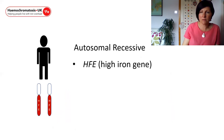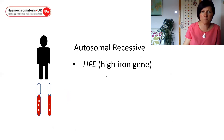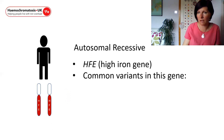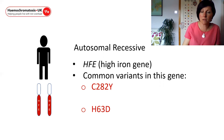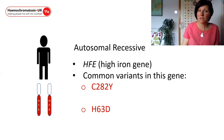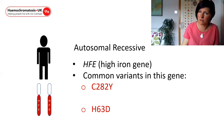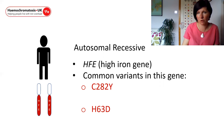The most common version of hemochromatosis is caused by variants in the HFE gene, or the high iron gene. There are two very common variants present in the white Caucasian population: C282Y and H63D. C282Y is a full-blown mutation which can dramatically reduce the amount of working protein present, whilst H63D is a milder variant which might just slightly reduce the amount of working protein.